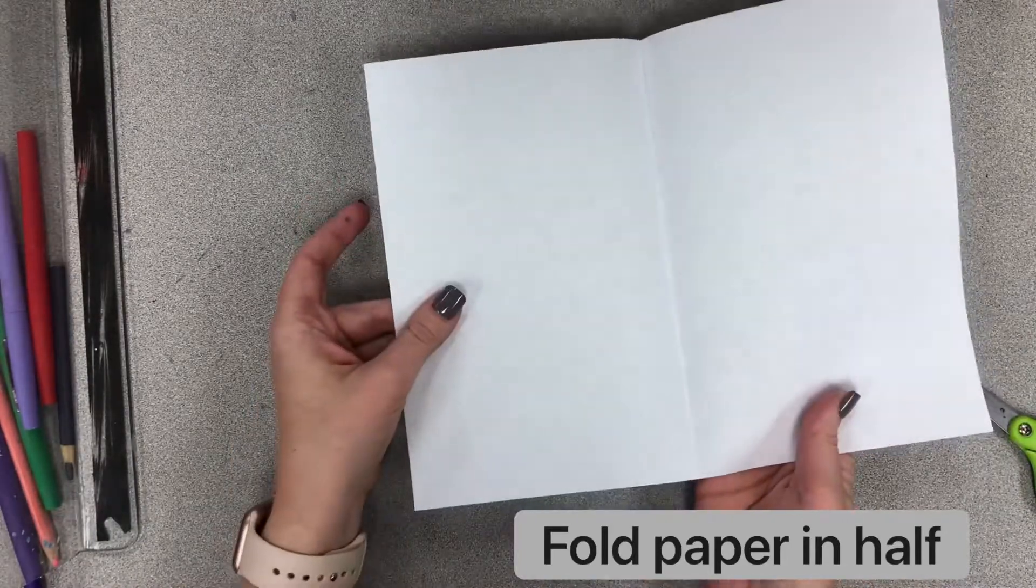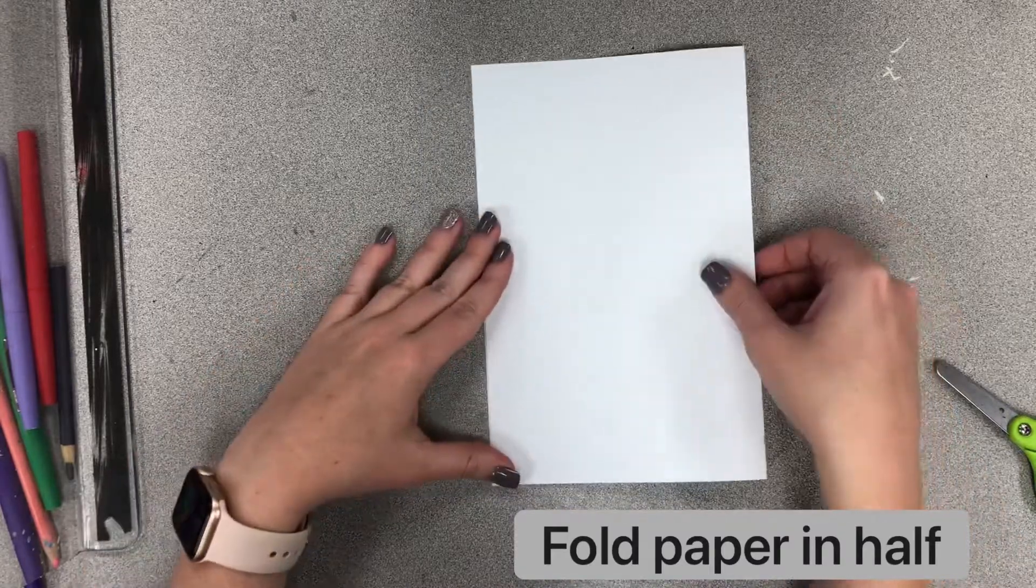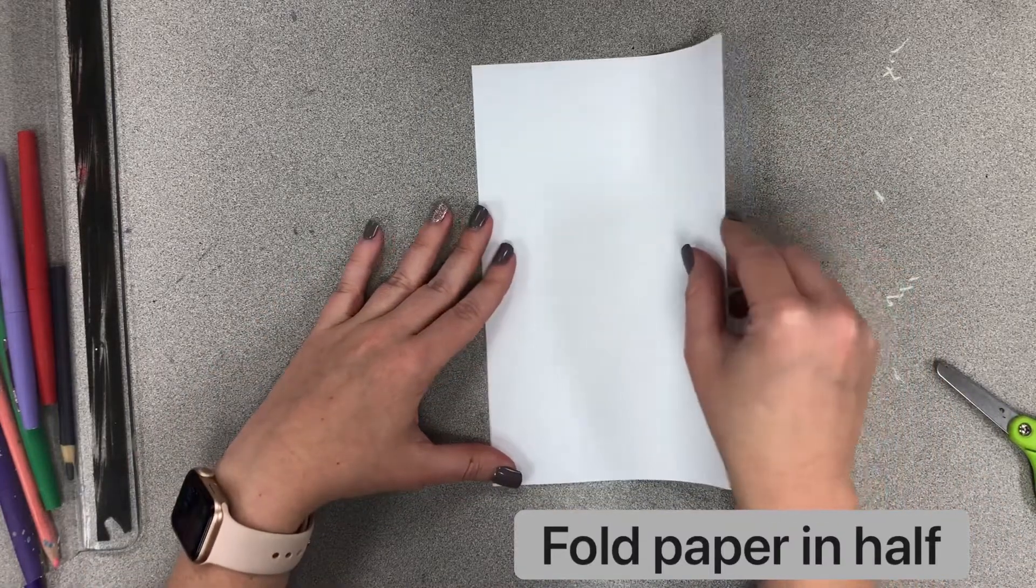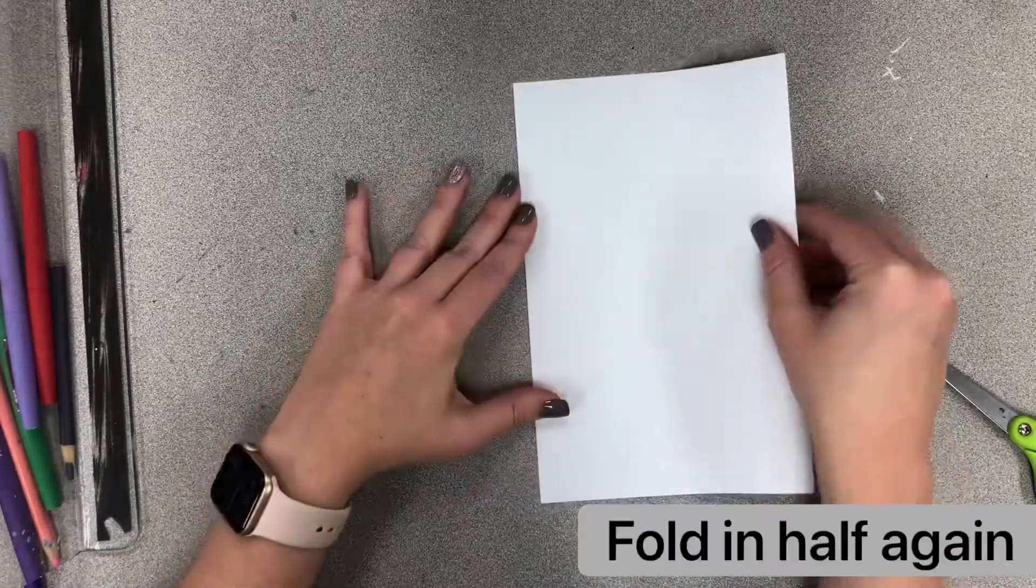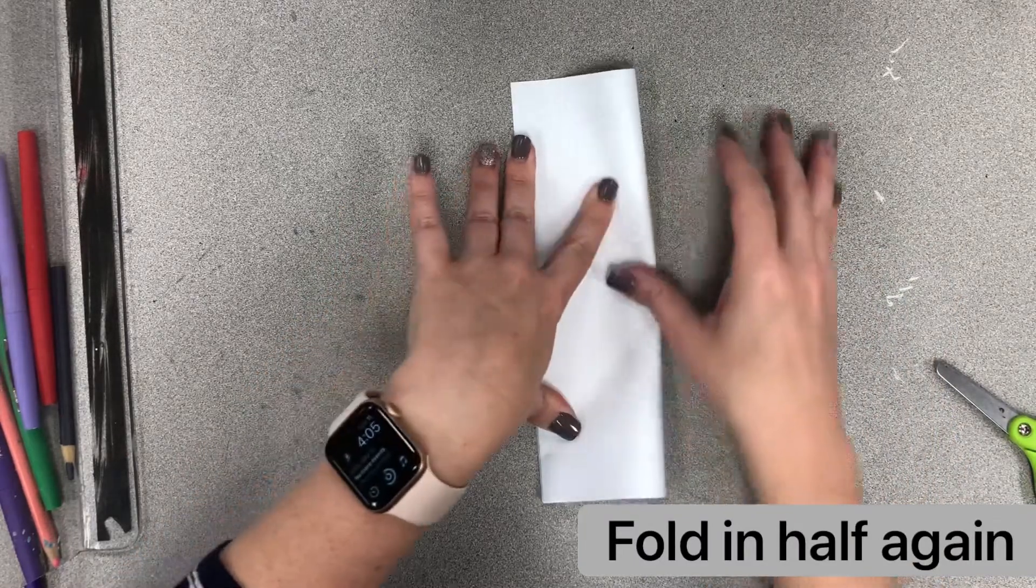Okay, so I folded it in half like that. Now all I need to do is fold it in half again. So I'm not going to fold it this way. I'm going to fold it long ways. So I should have a nice skinny looking hot dog.